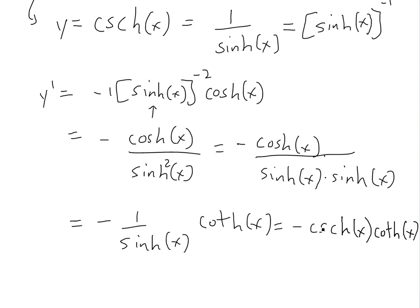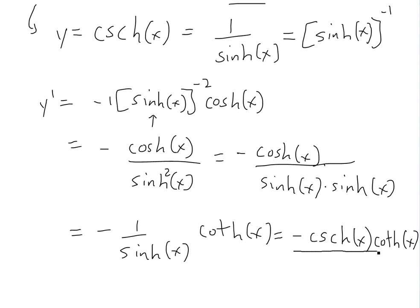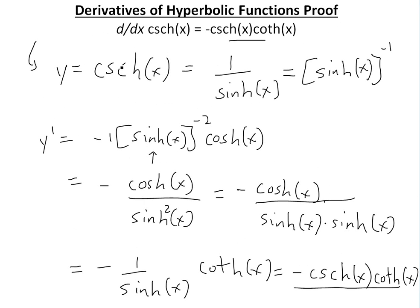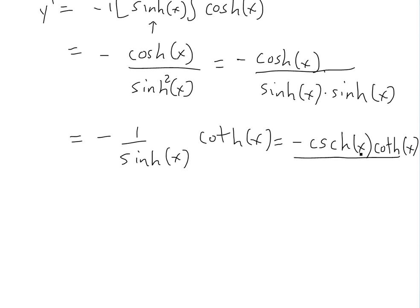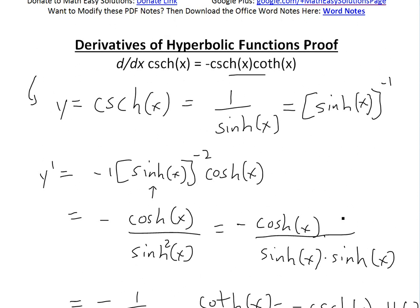So basically this is our answer. We've just proved the derivative of hyperbolic cosecant of x equals negative hyperbolic cosecant of x multiplied by hyperbolic cotangent of x, and that's the proof.